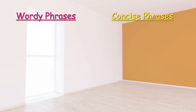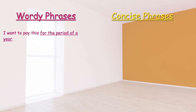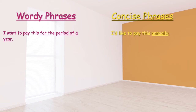Next wordy phrase: 'I want to pay this for a period of a year.' The wordy part is 'for a period of a year.' We can prune this phrase down to one word: 'annually.' The concise version becomes: 'I'd like to pay this annually.' We pruned 'for a period of a year' down to just 'annually.'